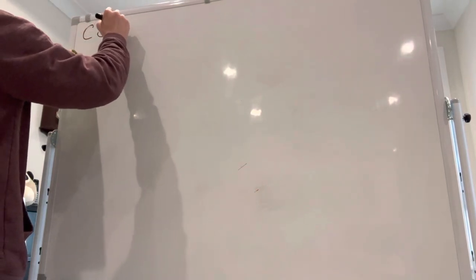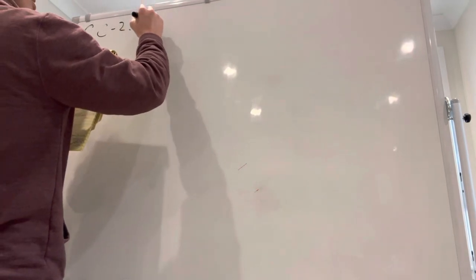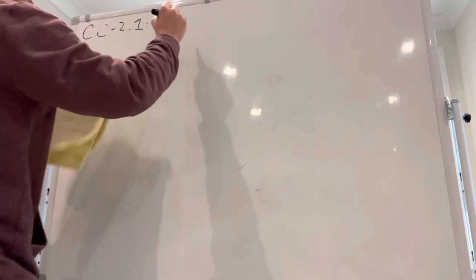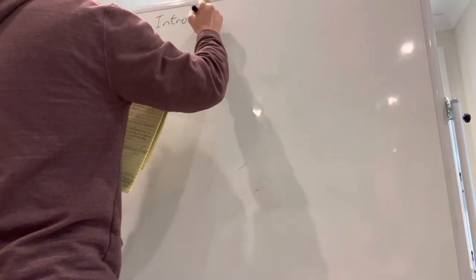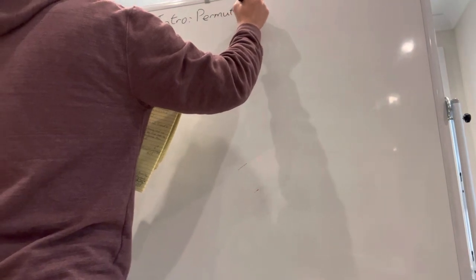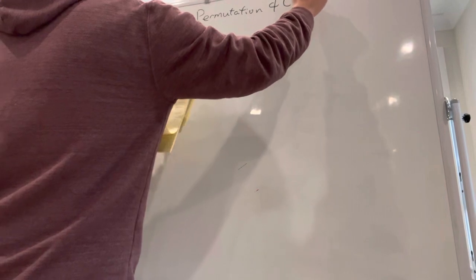So this is the counting and combinatorics. This part is an introduction to two items: permutation and combinations.